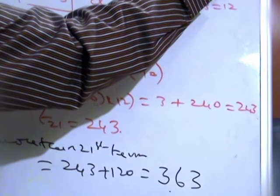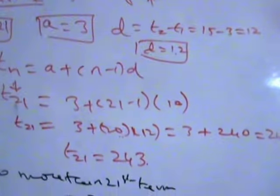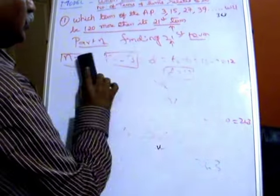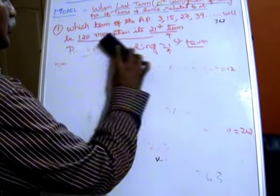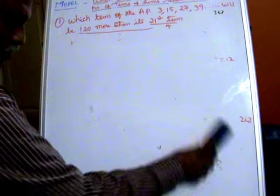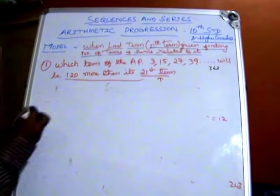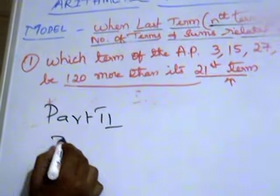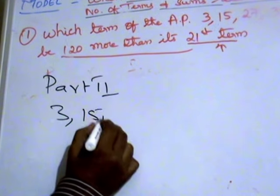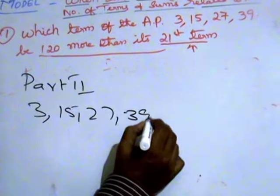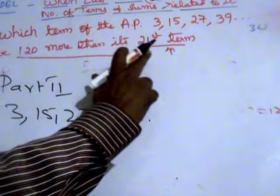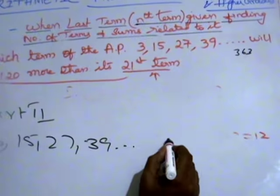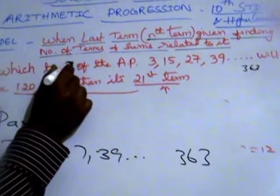In Part 2, the sequence is 3, 15, 27, 39, dot dot dot, and 120 more than the 21st term is 363. We need to find which term of the AP equals 363.